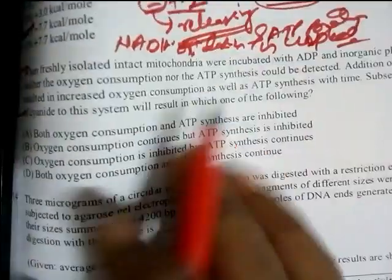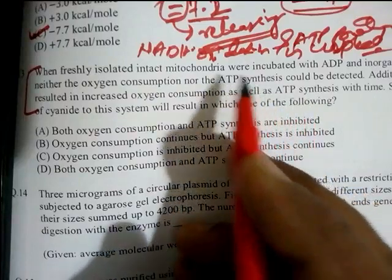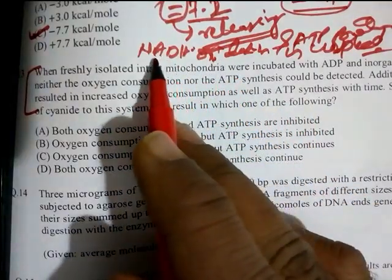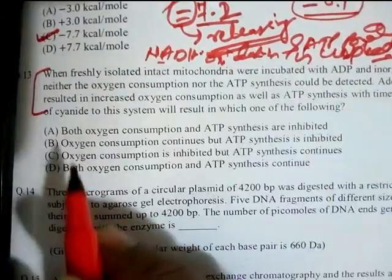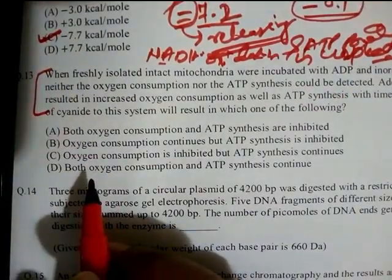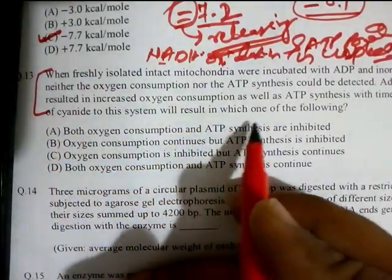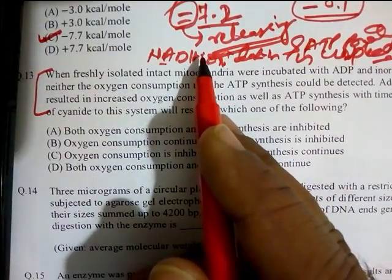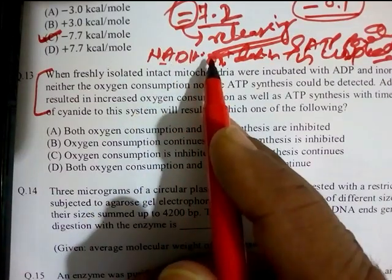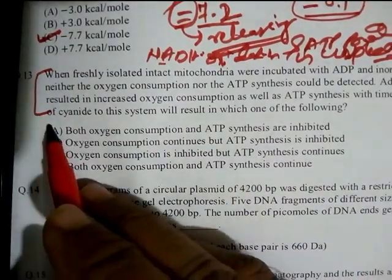Subsequently, addition of cyanide to this system will result in which of the following? Since cyanide inhibits NADH oxidation, and NADH oxidation requires oxygen, oxygen consumption will also stop. ATP synthesis is also inhibited. Therefore, the answer is: both oxygen consumption and ATP synthesis are inhibited.